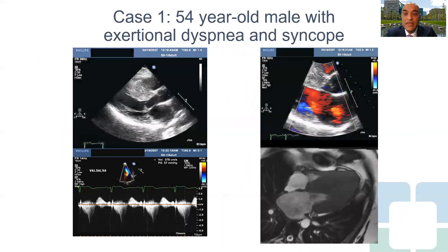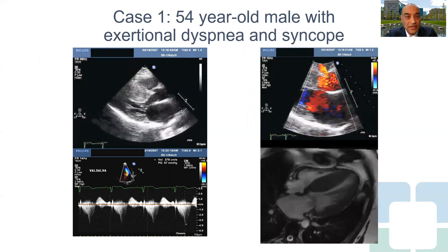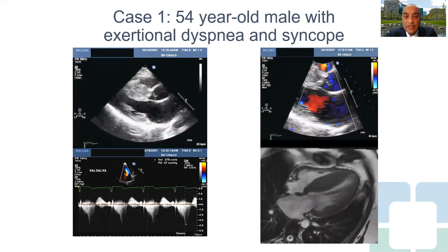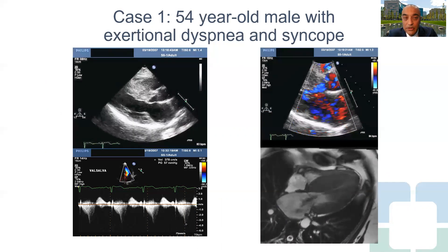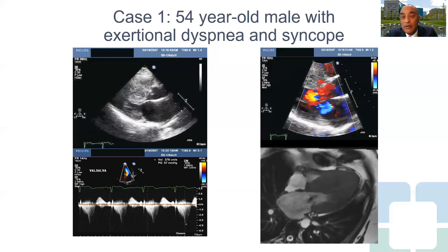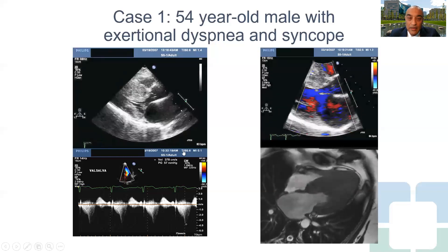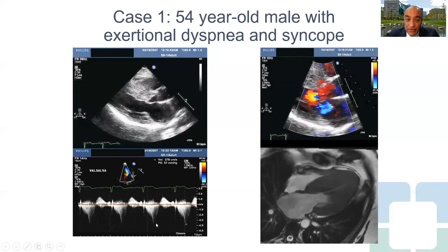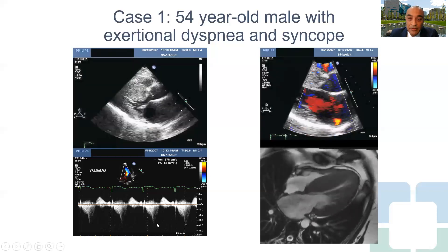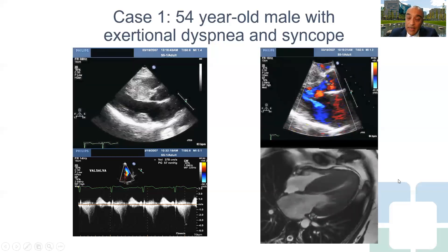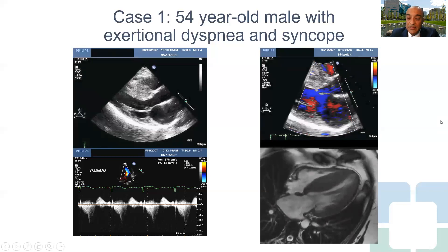Let's start with two examples. The first is a 54-year-old male with exertional dyspnea and syncope. As you can see in the four imaging panels, this patient has severe basal septal hypertrophy in the left upper column. In the right upper column, there is a lot of flow turbulence in the left ventricular outflow tract, resulting in a severe dynamic late-peaking outflow tract gradient reaching about 60 millimeters of mercury. The cardiac MRI in the bottom right panel confirms very severe basal septal hypertrophy.